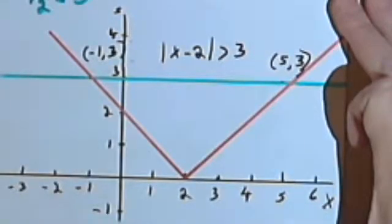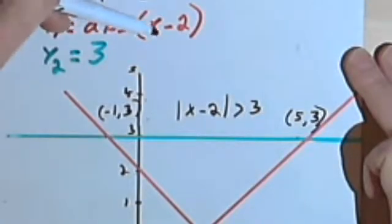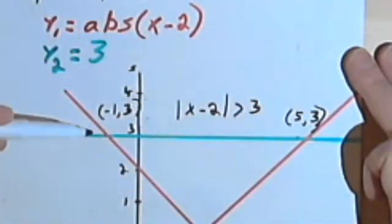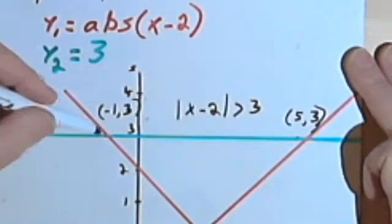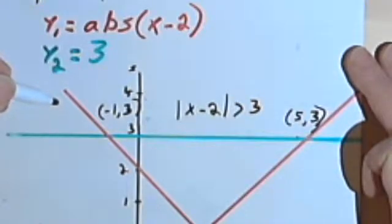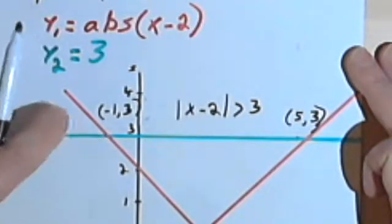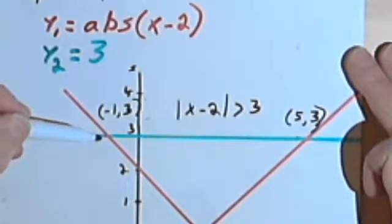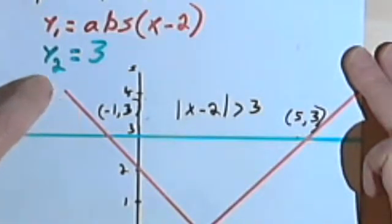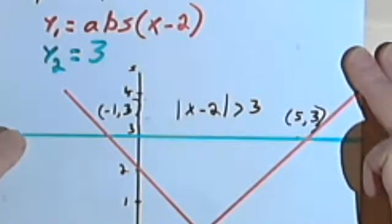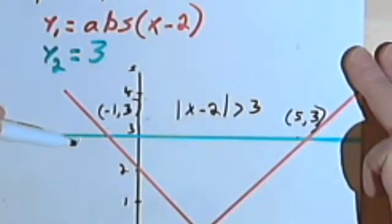Now I want to find out where the absolute value part of the equation — the absolute value of x minus 2 — was greater than 3. In other words, where is the absolute value of my graph greater than the y equals 3 line? Basically, it's going to be the places where the graph is above that line. I know that they meet when x is negative 1. Any place to the left of that point where they meet at negative 1 comma 3, my red line — my absolute value v — is higher than my y equals 3 line. So all these places where my red line is higher, where my absolute value has a greater value than 3, are going to be parts of my answer.